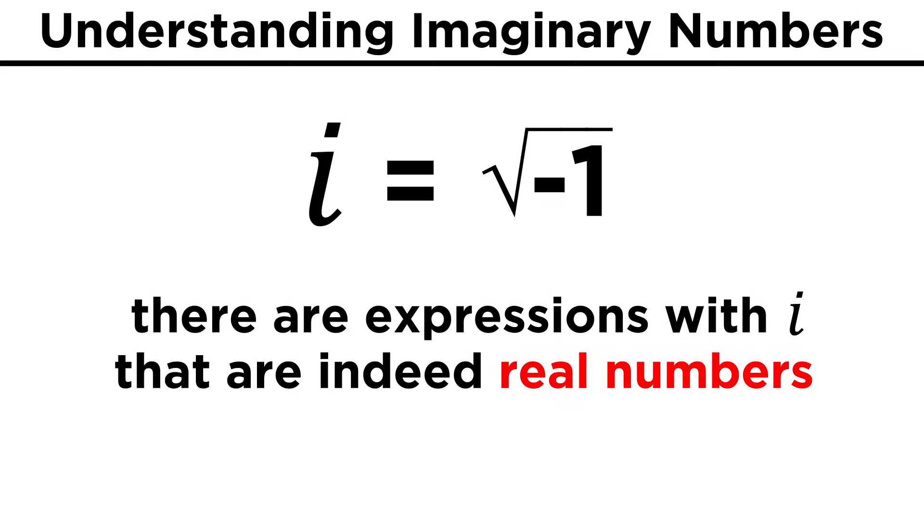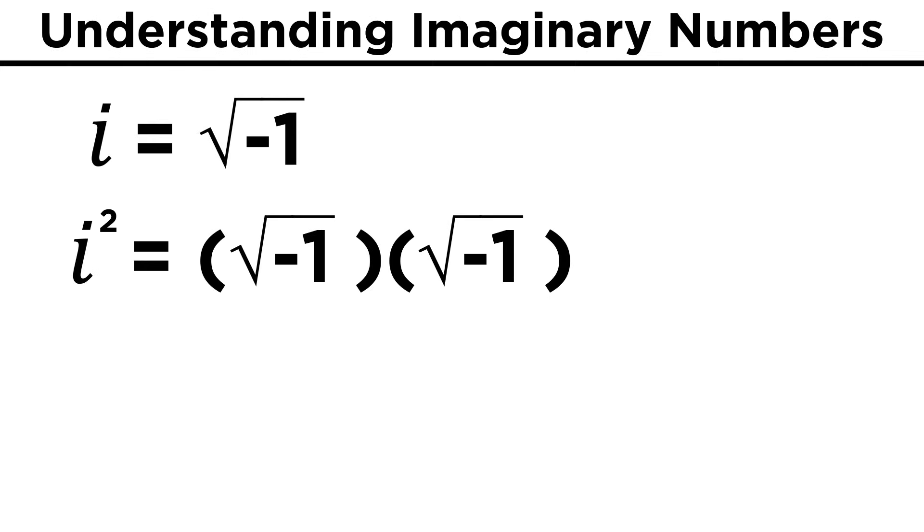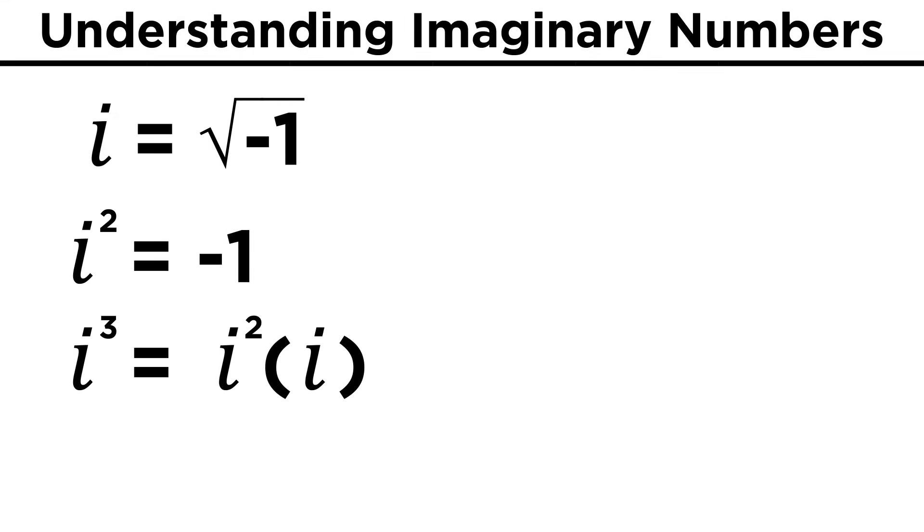But sometimes we can manipulate i to get real numbers. i squared, for example, is root negative one times root negative one, which is negative one. i cubed can be expressed as i squared times i, and we just said i squared is negative one, so i cubed is equal to negative i.